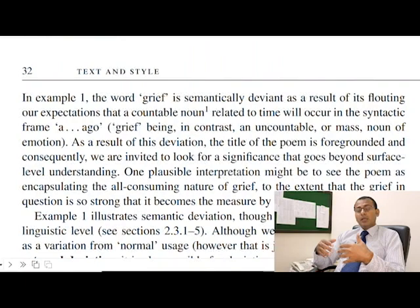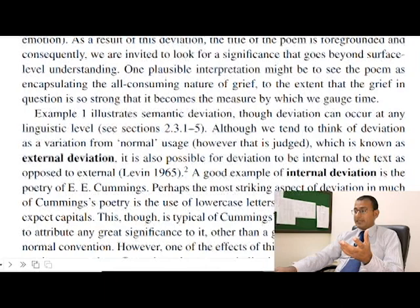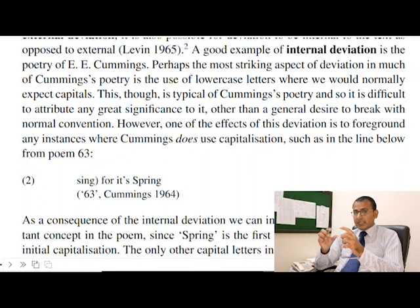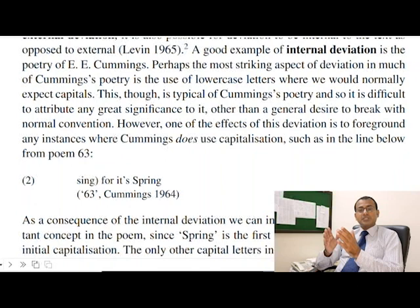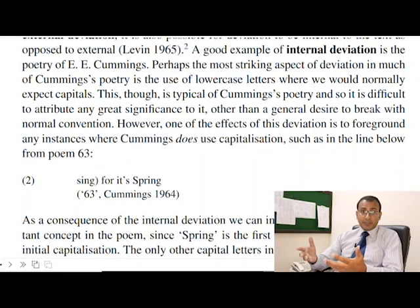You can see that here the word 'spring' is starting with capital S — 'for it is spring.' This is poem 63 by Cummings. This is internal deviation. Usually, we see that the very first letter of the verse is capitalized, but here 'sing' is starting with a small letter, while 'spring' has S as capital. So this is internal deviation.